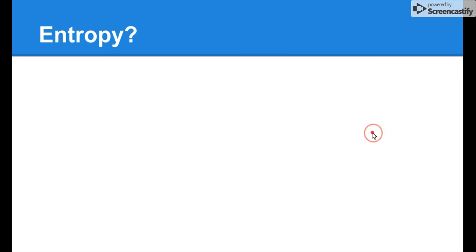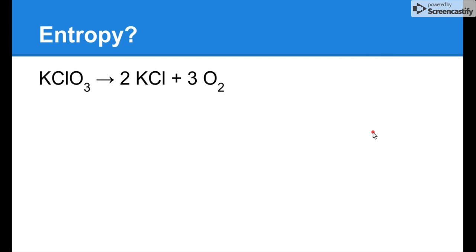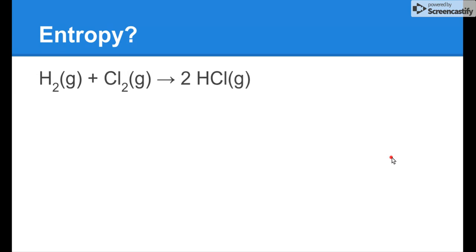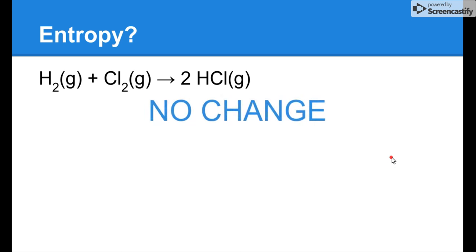Next question: what's the entropy for this reaction? Positive delta S — we're going more disordered. There's one KClO₃ particle and we end up with more particles. How about the entropy for this next reaction? No change — sometimes reactions have no accompanying entropy change. We start with two particles (H₂ and Cl) and end up with two particles (two HCl), so there's really no change in disorder.